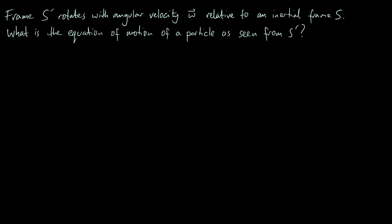Hello everyone. In this video we're going to see how fictitious forces like the centrifugal force and the Coriolis force arise in a rotating frame. Essentially the question we're asking is: if we have a frame S-prime which is rotating with an angular velocity omega relative to some inertial frame S, then what is the equation of motion of a particle as seen from S-prime?